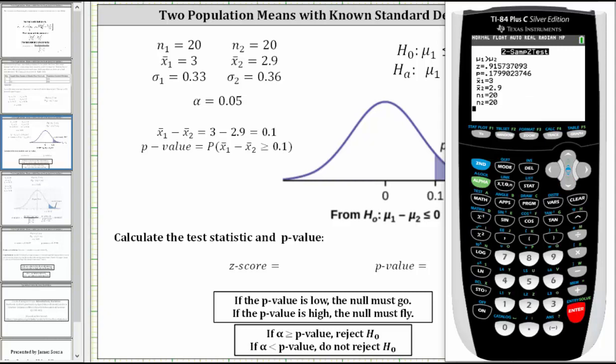The z-score is approximately 0.9157. The p-value is approximately 0.1799. Let's record this information.